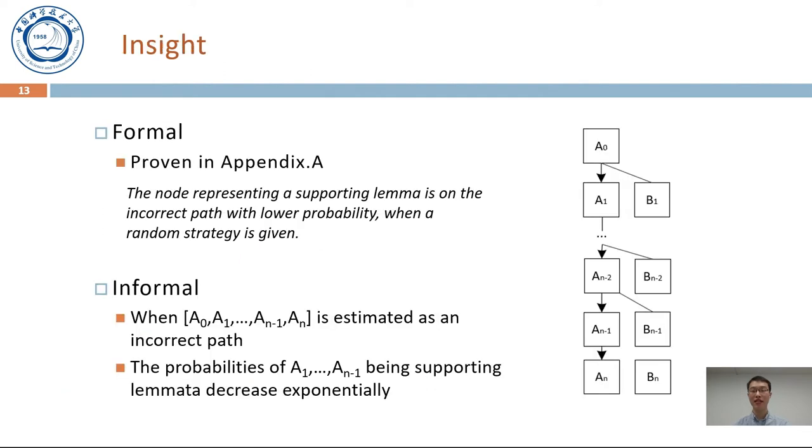The strategy is designed based on our insight. Formally speaking, the insight is that the node representing a supporting lemma is on the incorrect path with lower probability, when a random strategy is given. It is proven in our appendix in our paper. Informally, when a path A0 to An is estimated incorrect, the probabilities of A1, A2 to An-1 being supporting lemma decrease disproportionately.